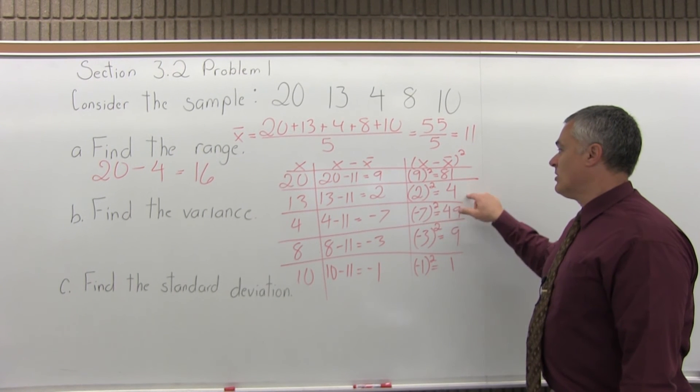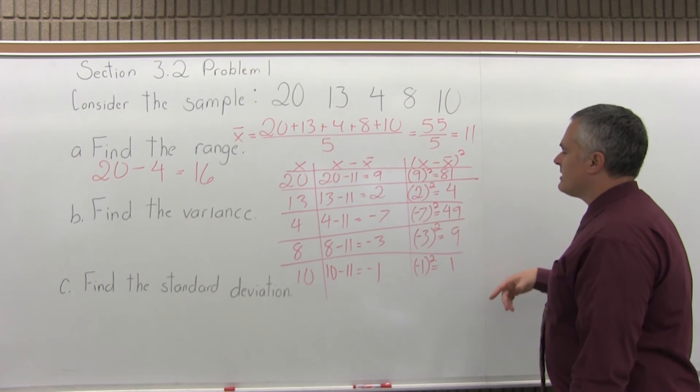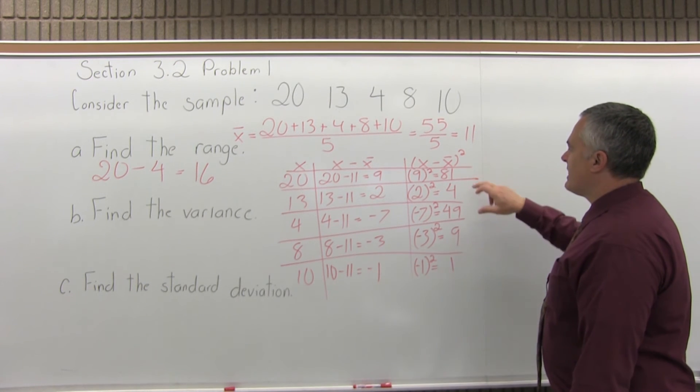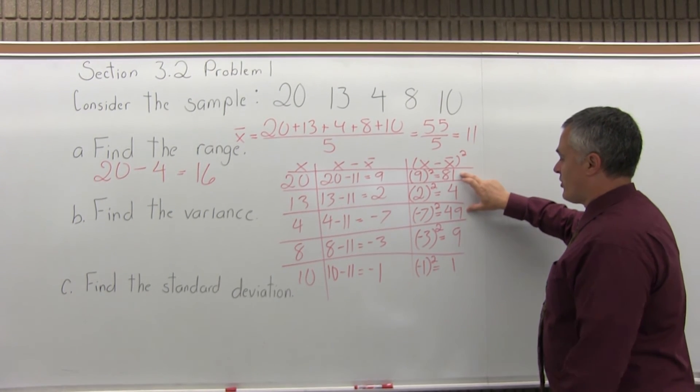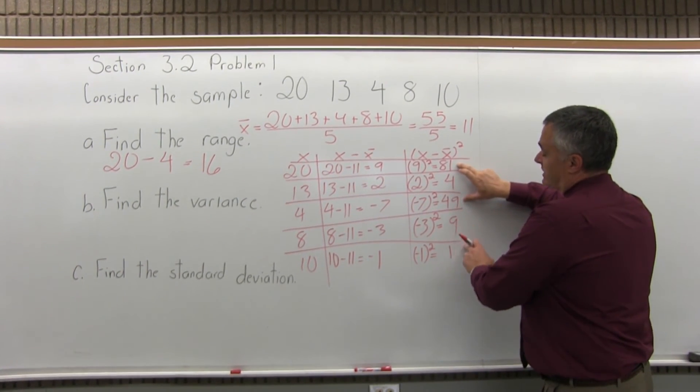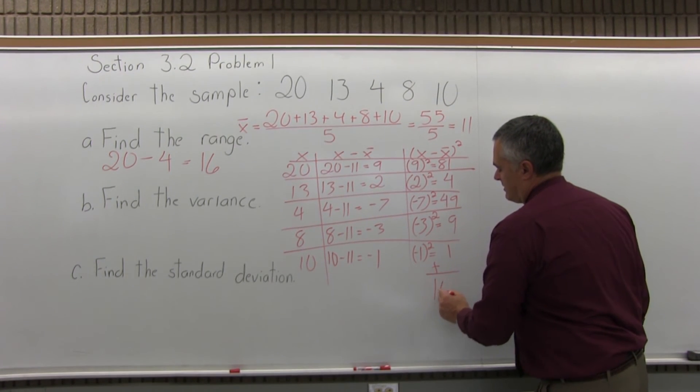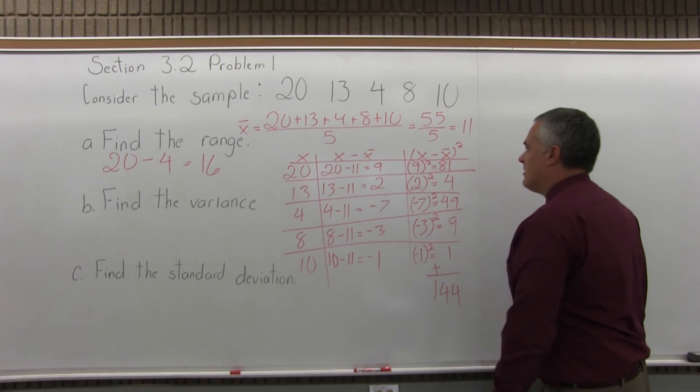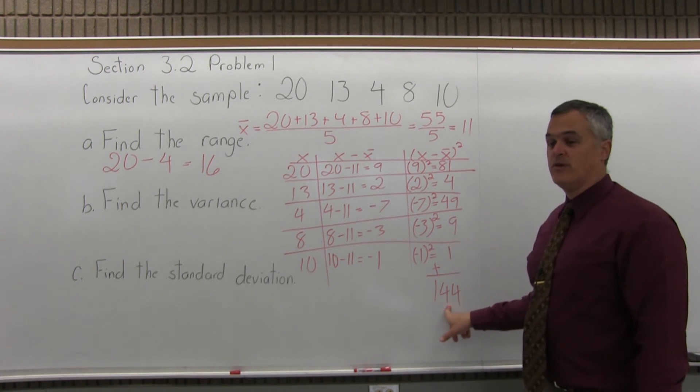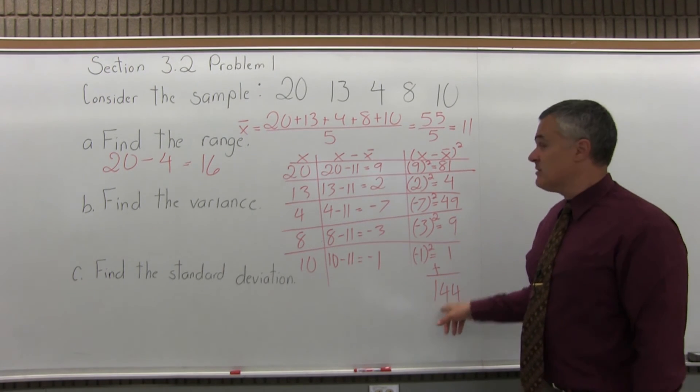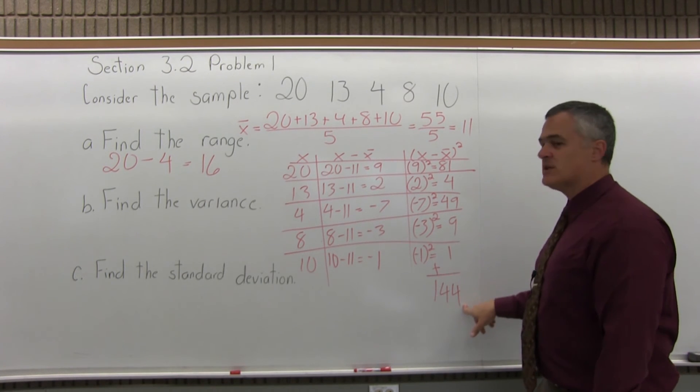Step 3, get a total of the last column. So as I total this up, you can add going right down, you can add it with a calculator. I can see that 81 and 49 combine nicely to make 130. 9 and 1 is 10. 130 and 10 more is 140, and then plus 4, you'd get 144. Or you could just add right in a row. But however you do it, the total of the last column is 144. That's step 3. I have a total of the last column. 81 plus 4 plus 49 plus 9 plus 1 gives me a total of 144.